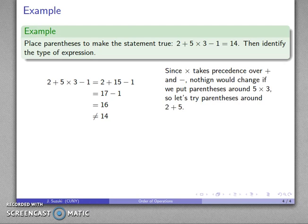Now again, since multiplication takes precedence over plus and subtract, nothing would change if I threw parentheses around the 5 times 3. The parentheses would say do this first, but we'd have to do that first anyway. So let's try throwing parentheses around the 2 plus 5 and see what that changes.